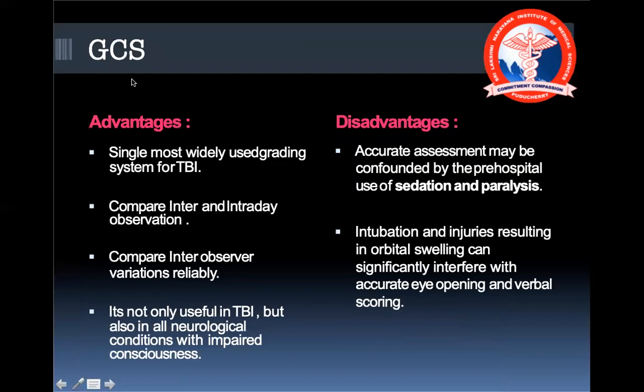GCS comes with some advantages and some disadvantages. The advantage is that it is consistent across all users and interpreters; inter- and intra-day observation is very easy and reliable. It is useful not only in traumatic brain injury but also in other neurological conditions. The disadvantages are that if patients are sedated, paralyzed, intubated, or have orbital swelling or neck injury, GCS cannot be assessed.